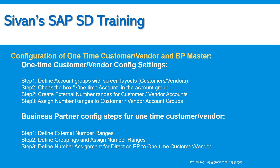For configuration of one-time customer or vendor in Business Partner: the one-time customer or vendor configuration settings involve defining one account group with the one-time account checkbox activated. We also need to activate external number ranges for customer or vendor accounts and assign number ranges to the account groups. Business partner configuration steps for one-time customer are: define external number ranges, define groupings and assign number ranges, and define a number range assignment for the direction Business Partner to one-time customer or vendor.